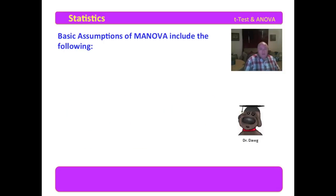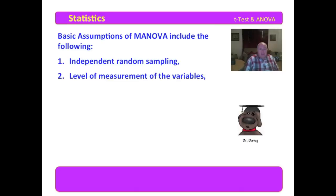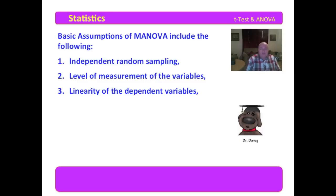The basic assumptions of MANOVA include the following. You need independent random sampling and an appropriate level of measurement of the variables. The groupings are nominal or ordinal — male, female, different institutions, that type of thing. The dependent variables need to be at least scale continuous variables; ratio variables make the best dependent variables in MANOVA. We also have to have linearity of the dependent variables, meaning those dependent variables will be correlated, which we establish with a correlational analysis like a Pearson R. We must also have multivariate normality — all dependent variables are normally distributed.